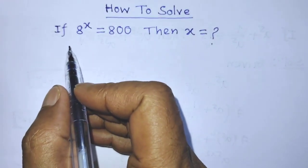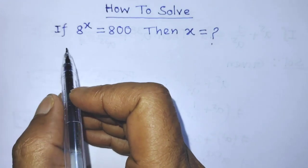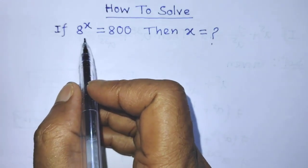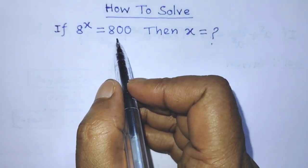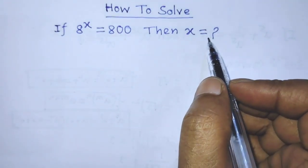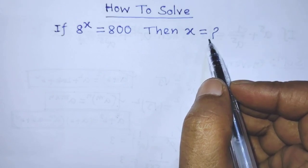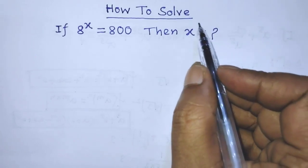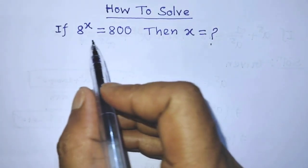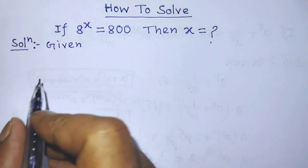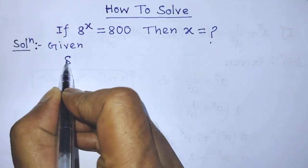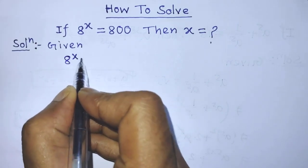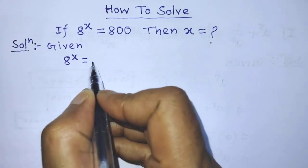Hello guys, you are welcome to solve this math problem: if 8 to the power x is equal to 800, then find the value of x. Today I am telling you how to find the value of x from this exponential equation. Our given equation is 8 to the power x is equal to 800.